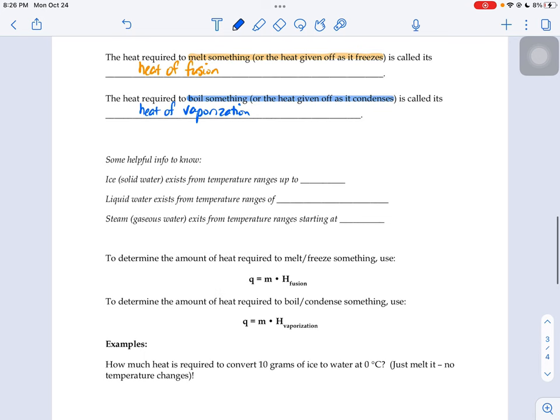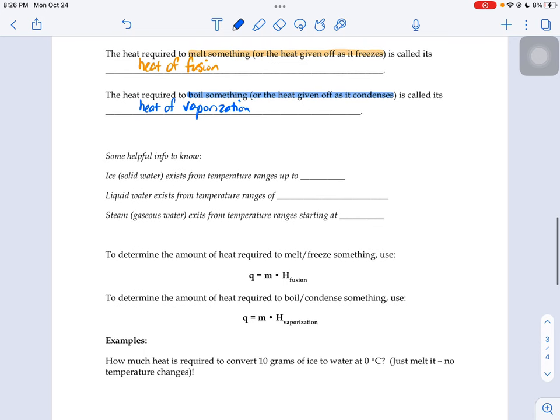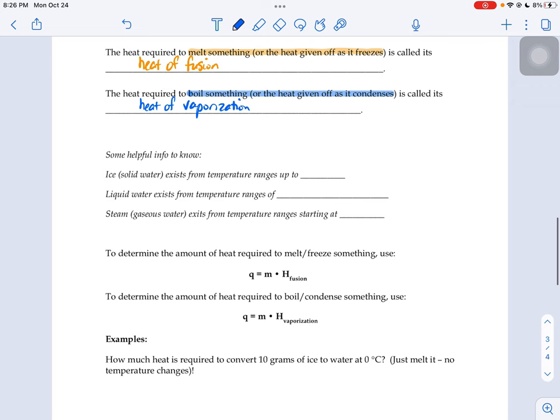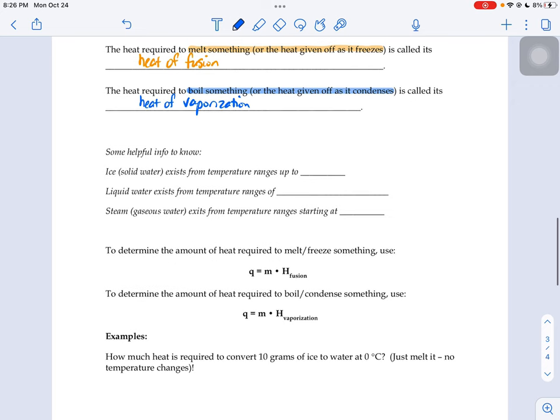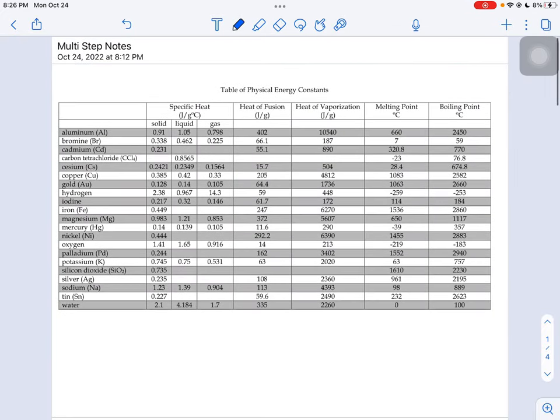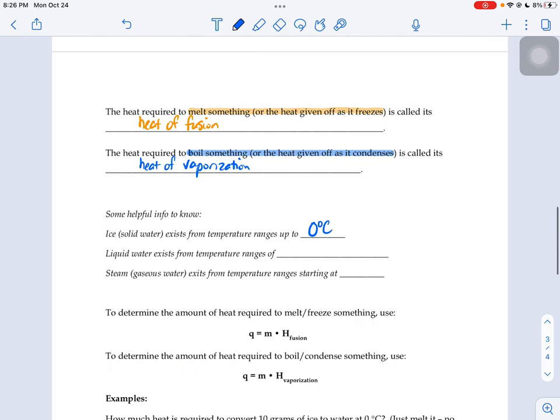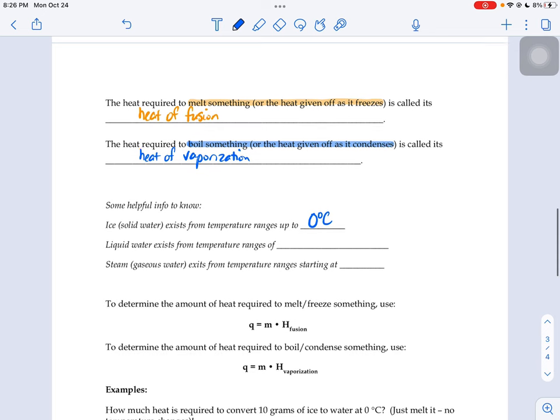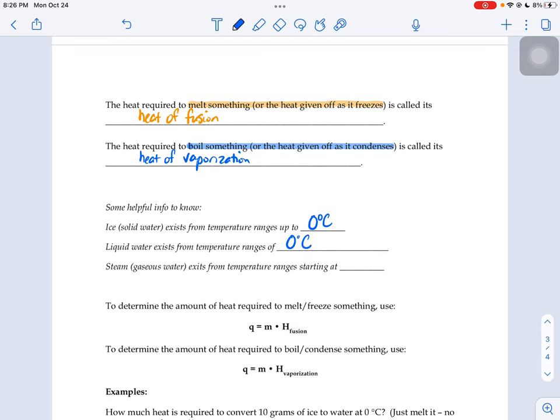So some helpful information to know off the top of your head is a little bit about water. So ice, solid water exists from temperature ranges up to zero degrees Celsius. Now you don't have to memorize this because it is on your chart right here that tells us the melting point of water. And then liquid water exists from zero degrees Celsius all the way up to 100. And then a hundred degrees plus is where steam starts to kick in.